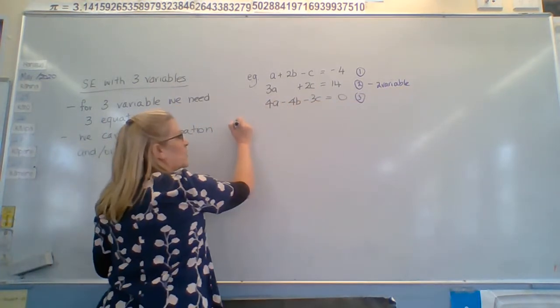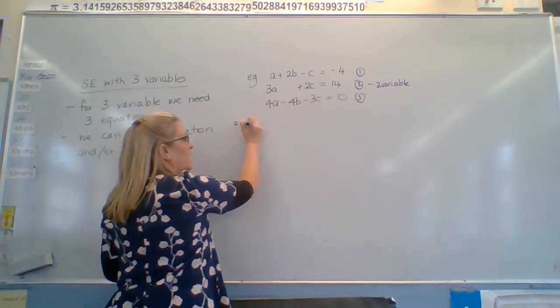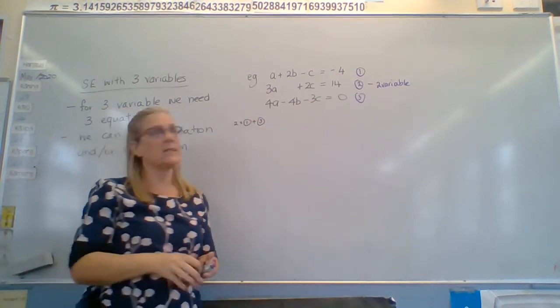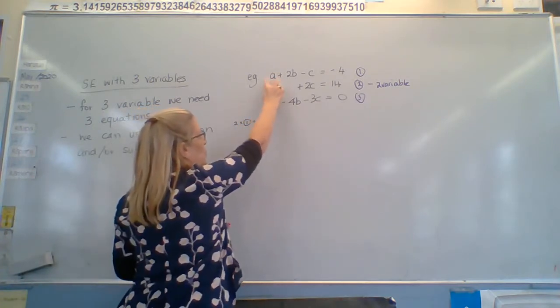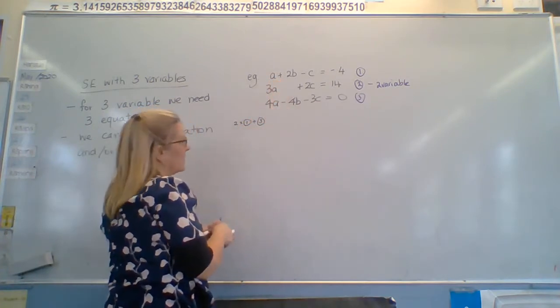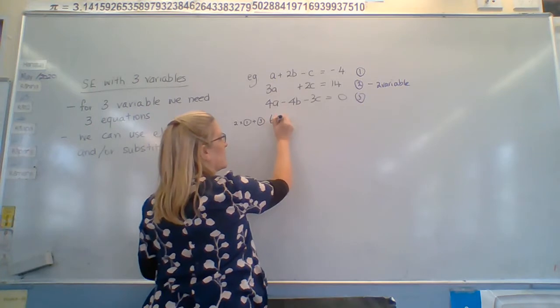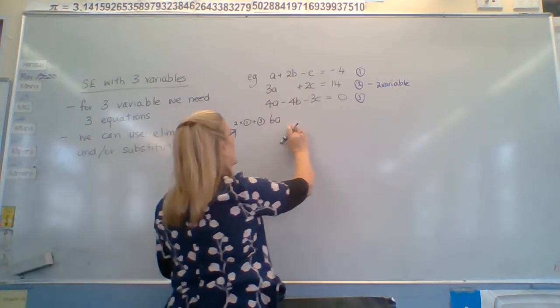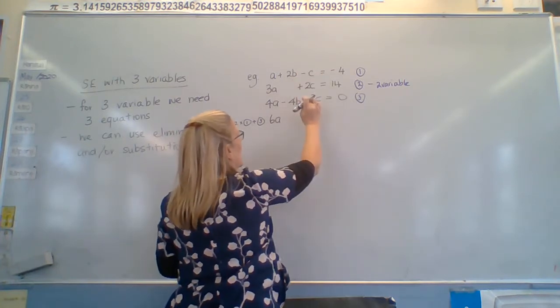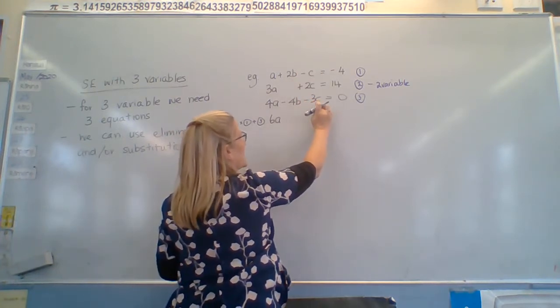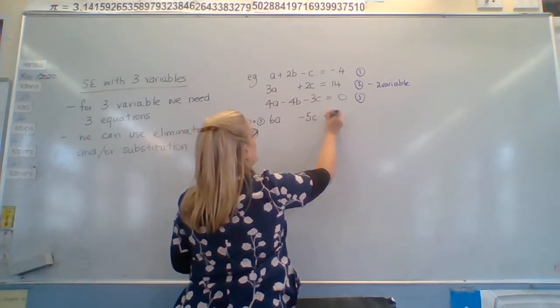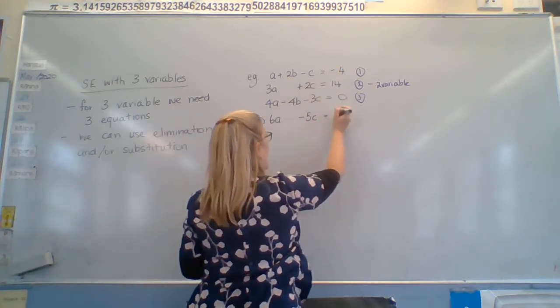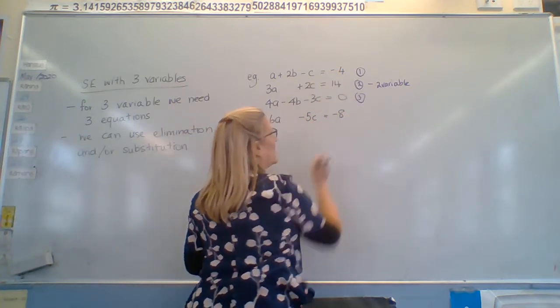Cool. So we're going to do two times one and add it to three. We can do all of that in one sentence. So two times a is two plus this is six a. Two times two b is four b minus four b is no b's. Negative two c plus negative three c is negative five c. We've got to do this one as well. This is one people forget. Two times negative four is negative eight plus zero is negative eight.